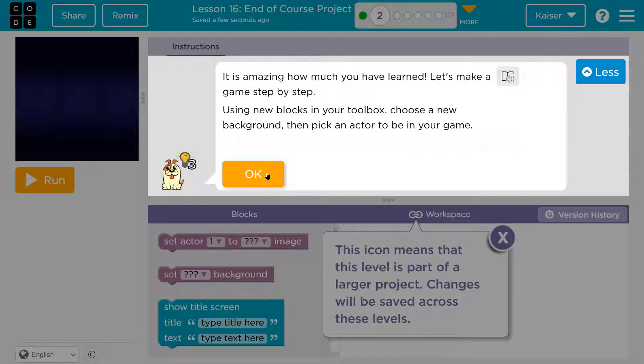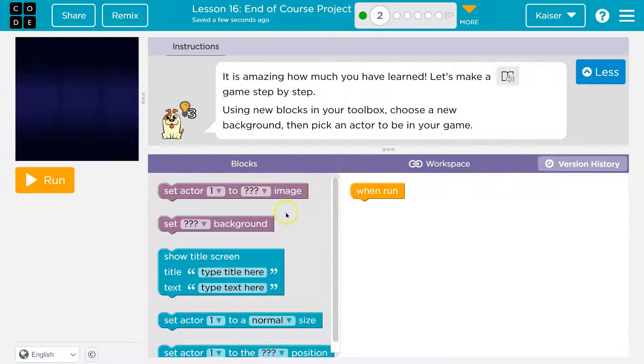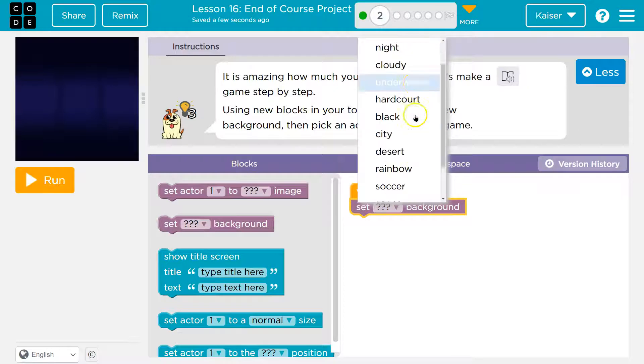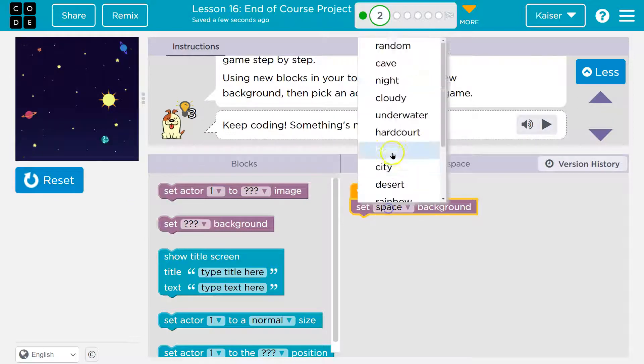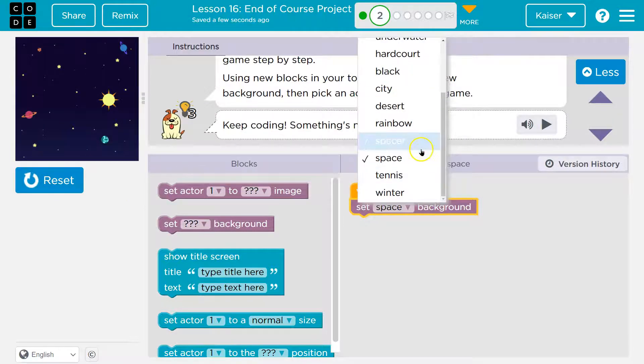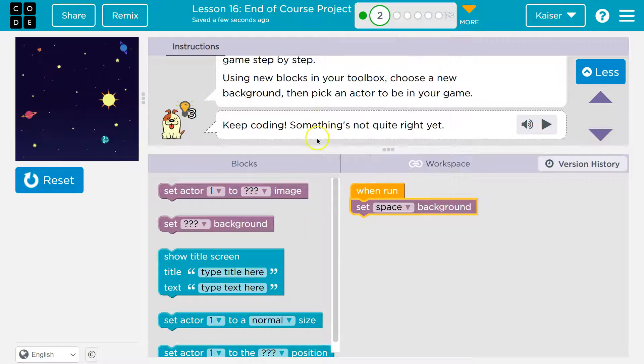Let's make a game using new blocks in your toolbox. Choose a new game background. When you pick an actor, then pick an actor. Okay. So yep, it's going to be saved. First, we get to do our background like it asks. Let's just make sure it connects to our win run block. Of course. Ooh, cloudy soccer, rainbow space. Well, I'm doing an alien. So I think I'll go space. It's pretty cool. Is there any other ones good for alien? Nope. Space it is. All right.